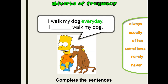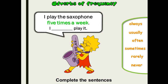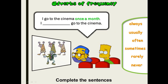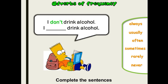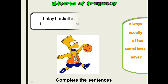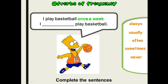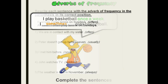I play the saxophone 5 times a week — it's usually. Excellent! I go to the cinema once a month — is it sometimes? No. Correct — it's rarely! I don't drink alcohol, so I never drink alcohol. Correct! I play basketball once a week — I sometimes play basketball.